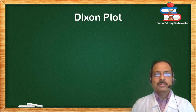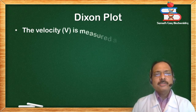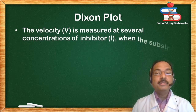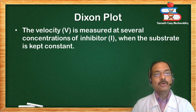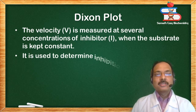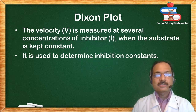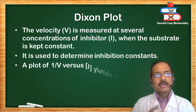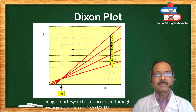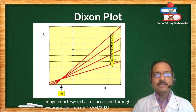Dixon plot: the velocity V is measured at several concentrations of inhibitor I when the substrate is kept constant. There are two variables: velocity and the inhibitor. The Dixon plot is used to determine inhibition constants. A plot of 1/V versus concentration of inhibitor yields a straight line. This is the Dixon plot.